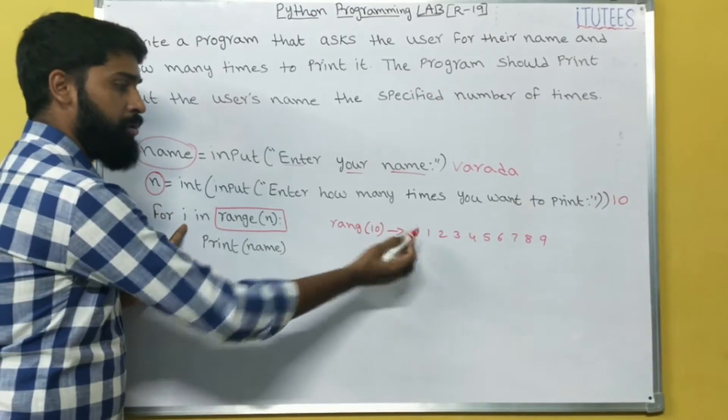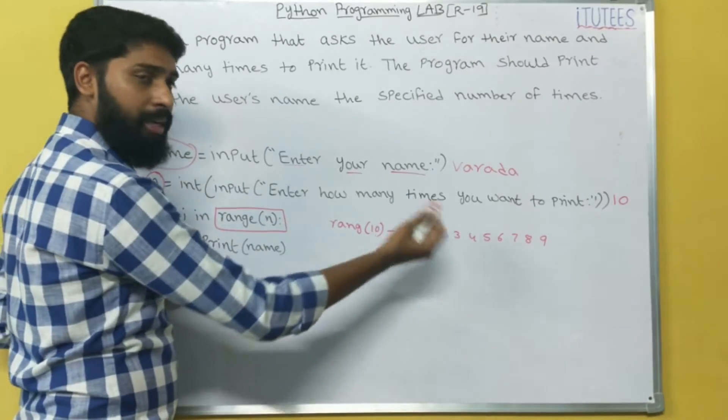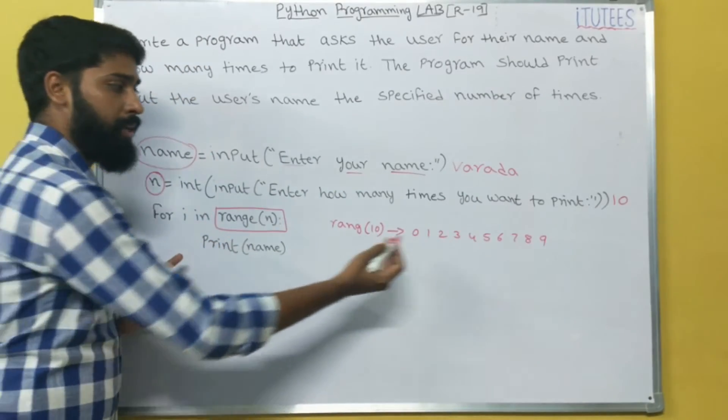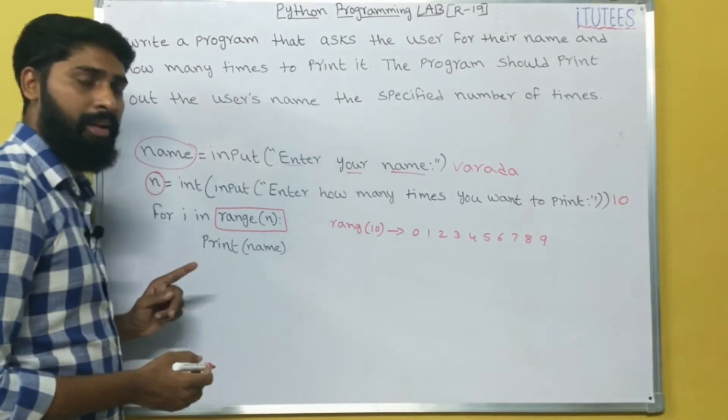That means, initially the i value equals to 0, in next 1, next 2, next 3, like that. In each iteration it becomes 3, 4, 5, 6, 7, 8, 9, like that.